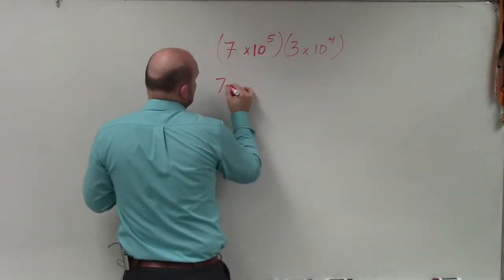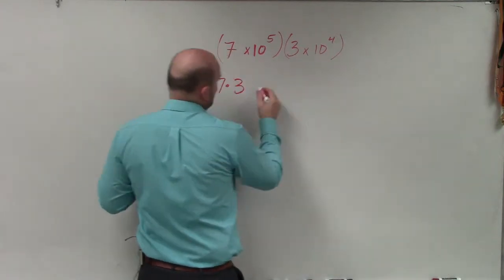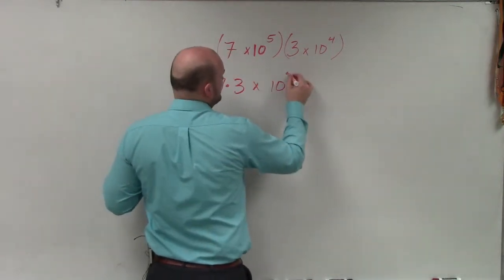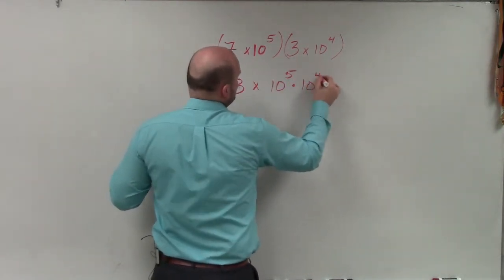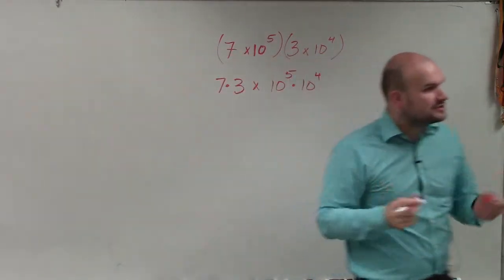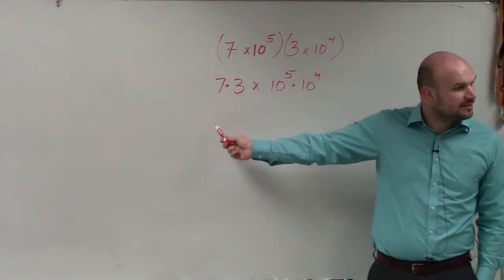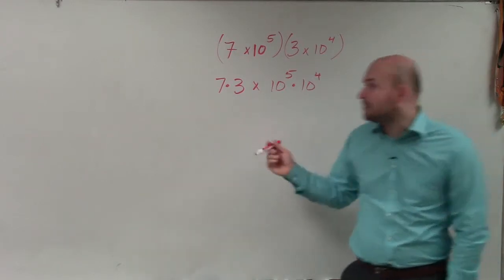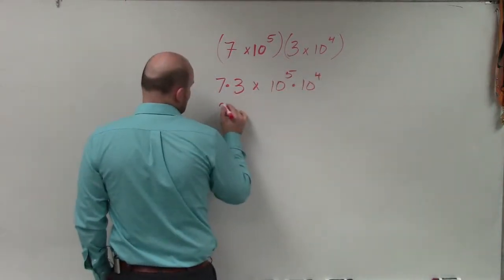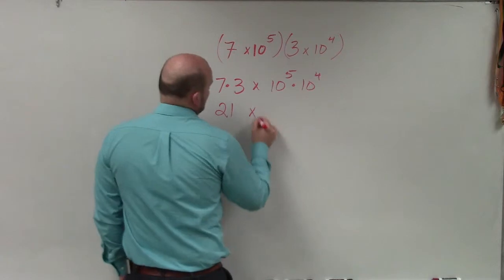So in this case, I have 7 times 3 times the 10 to the 5th times 10 to the 4th. Now, obviously, ladies and gentlemen, hopefully the multiplying and dividing of the real number should not be a problem, Amir. So 7 times 3 is 21 times.